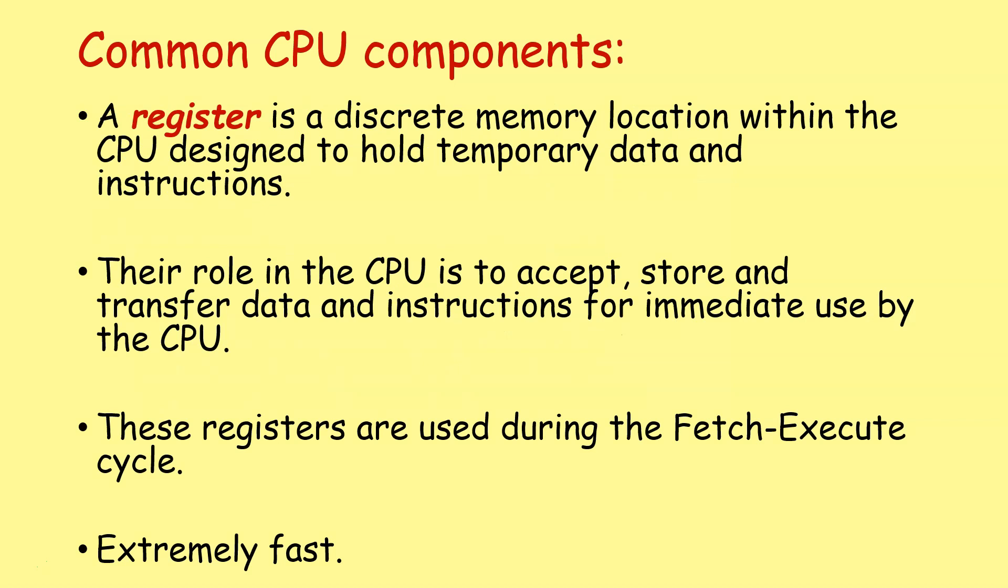Registers are discrete memory locations within the CPU designed to hold temporary data and instructions. The role in the CPU is to accept, store, and transfer data and instructions for immediate use by the CPU. These registers are used during the different stages of the fetch, decode, execute cycle. Registers are extremely fast, but they're very, very small. A register holds one instruction. It holds one piece of data. So if you're adding two and two together, you need to work out the answer. Two is held in a register. The other two is held in a register maybe. You put them together and the ALU does some arithmetic, and that answer, that four that you get out of it, has to be held in a register. So each individual number, each individual little piece of data, each instruction has to be held in one of these registers before it can be executed.